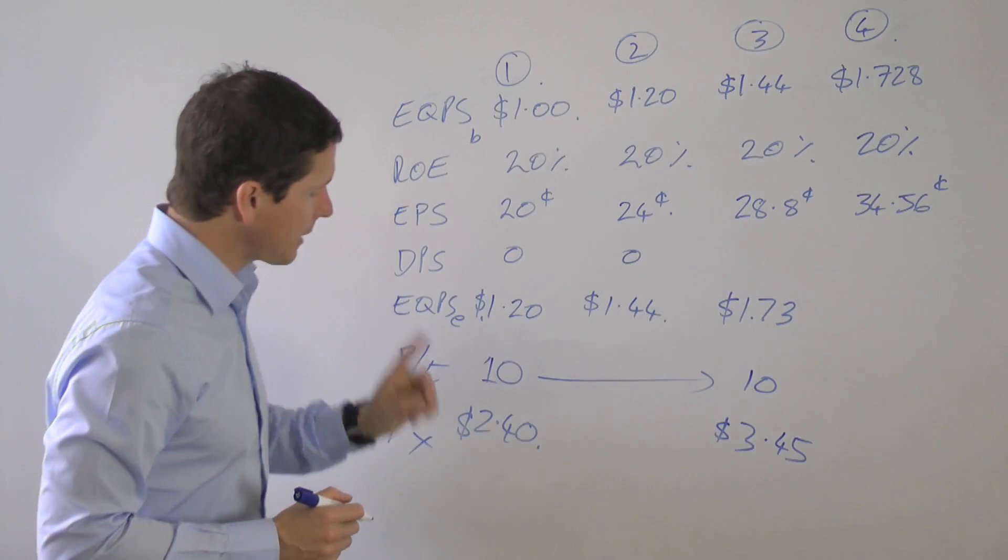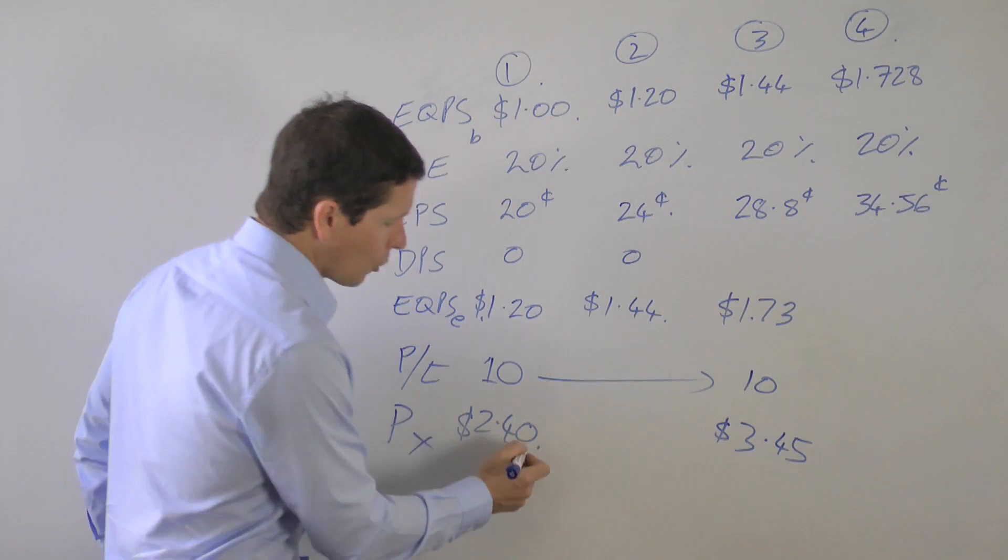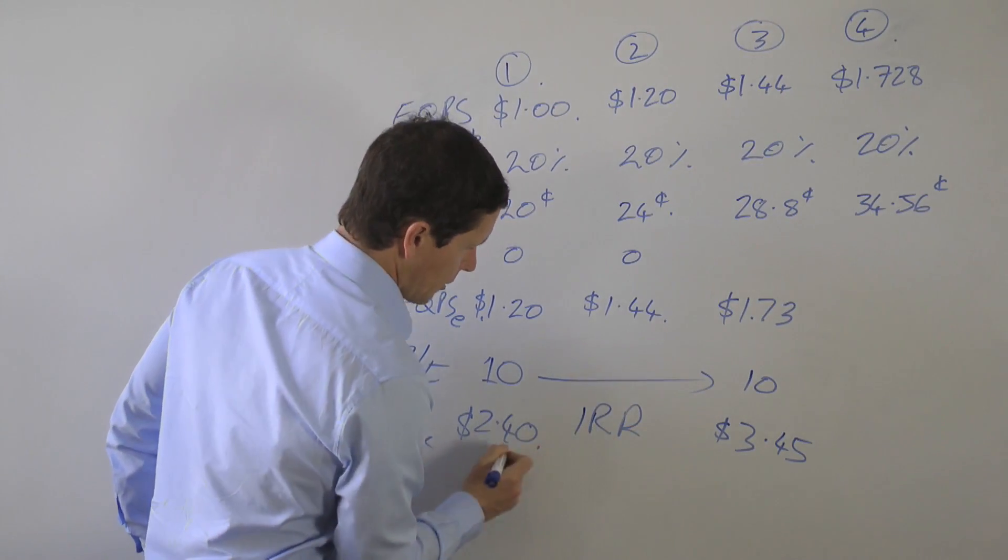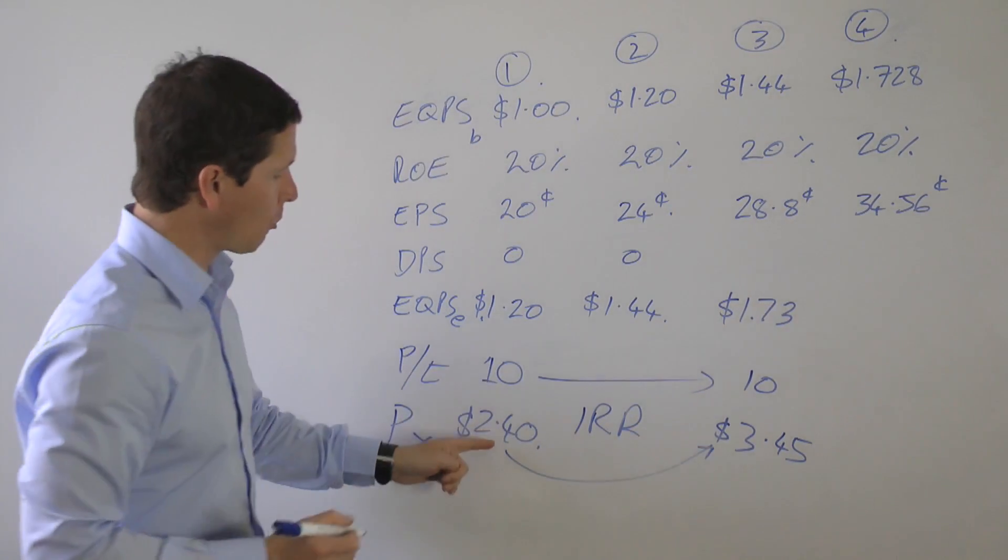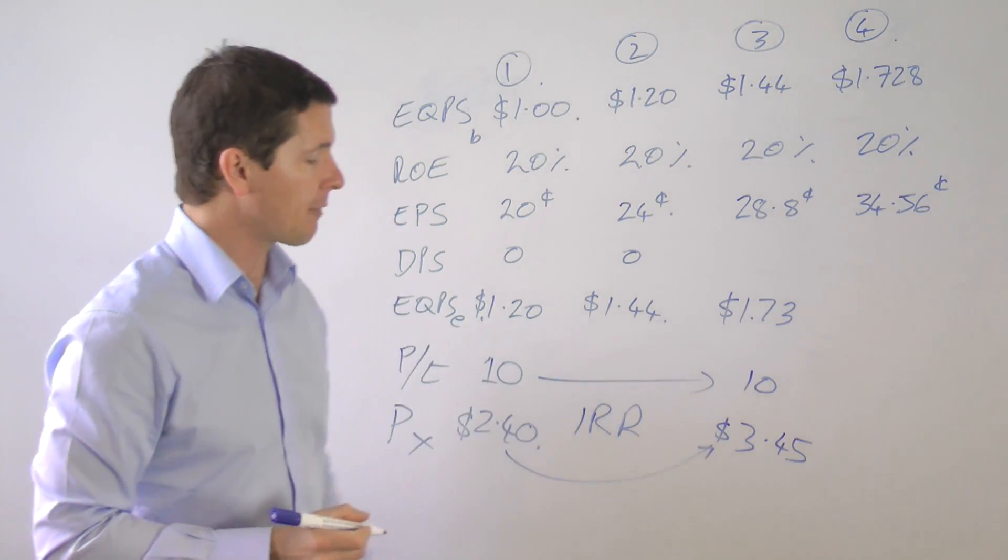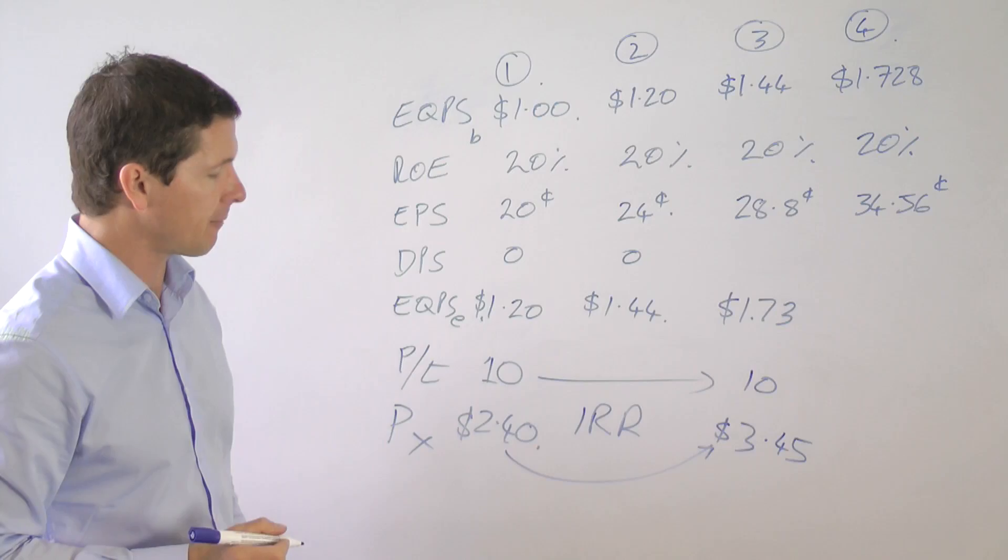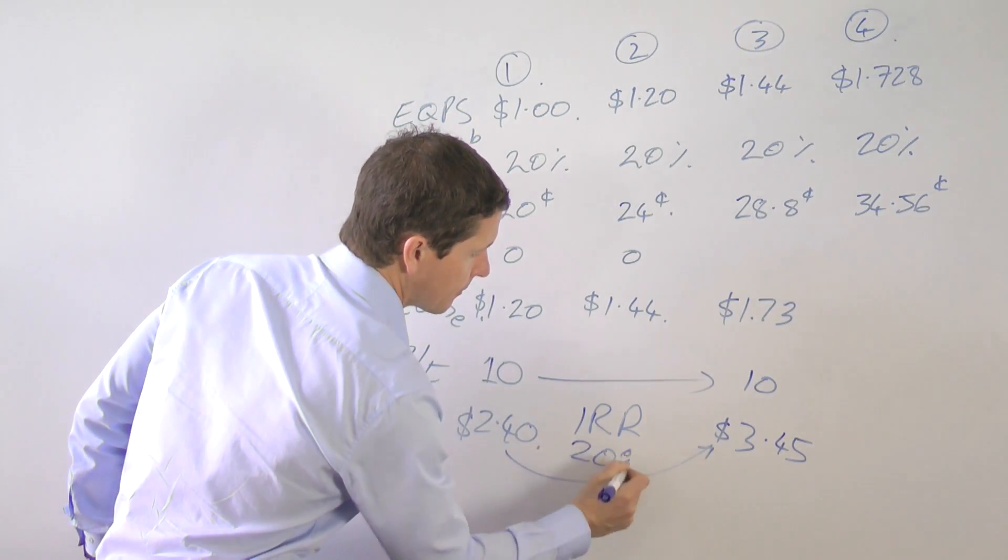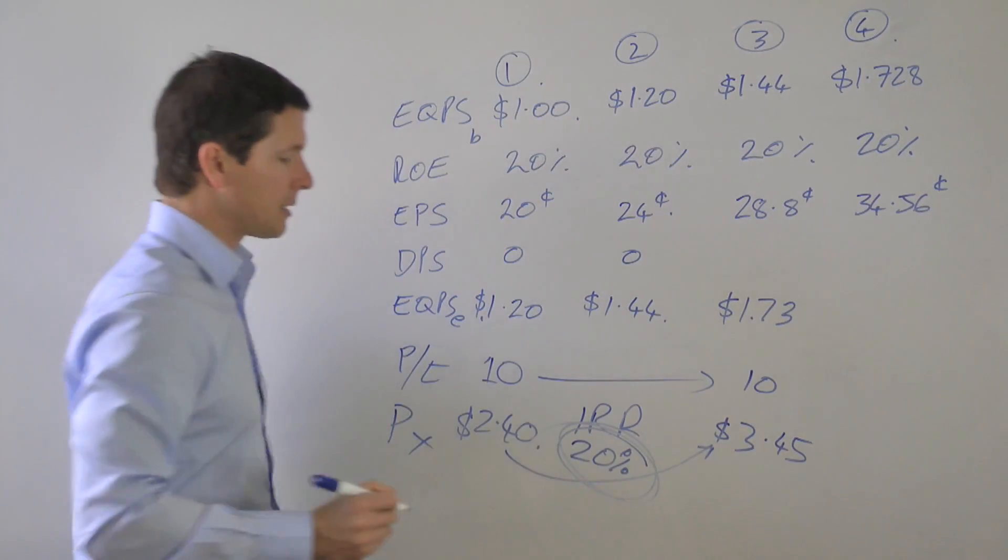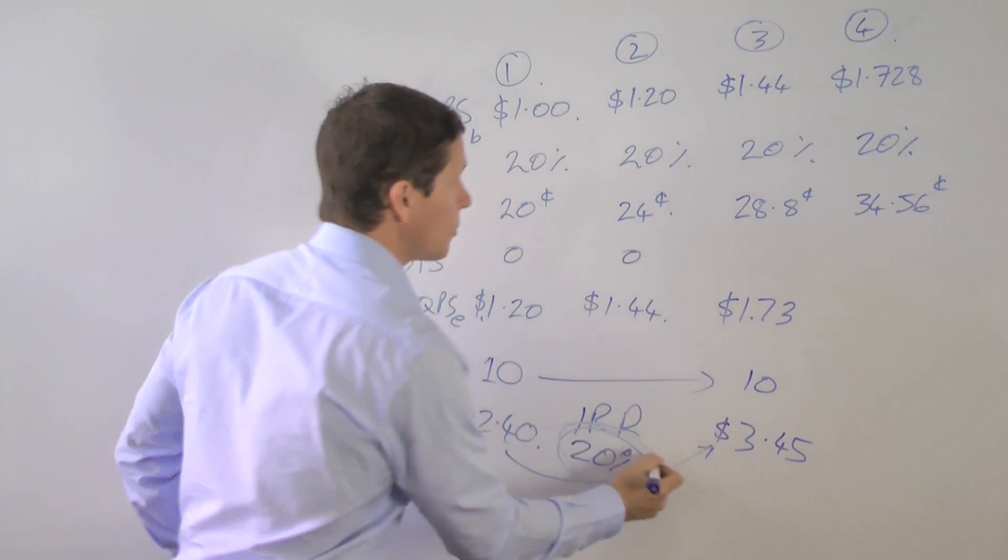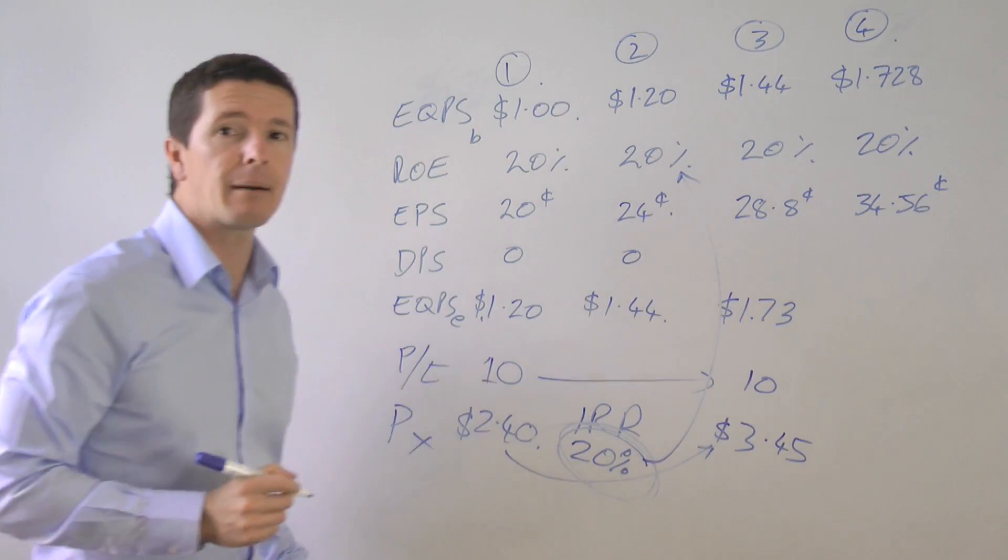Here's the interesting thing. Your internal rate of return, buying the shares in year one at $2.40 and selling them in year three at $3.45, your internal rate of return is 20%. And here's why this is so important.